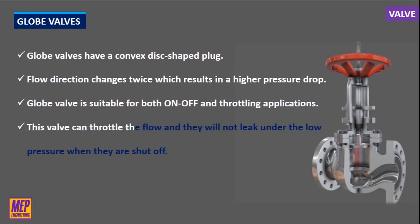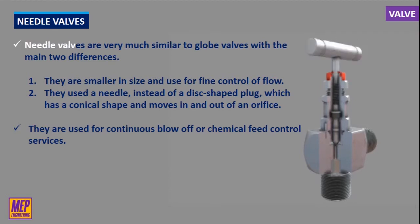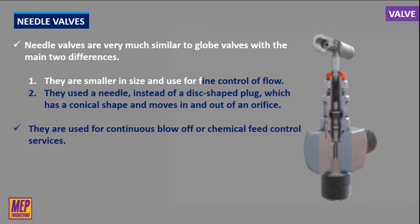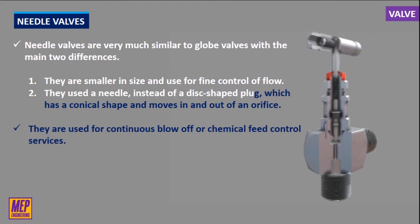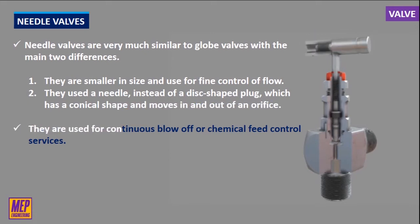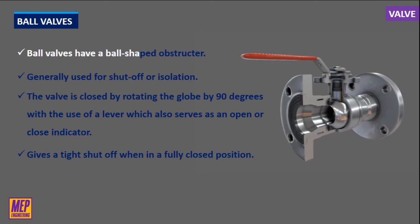Due to this type of construction, a globe valve is suitable for both on-off and throttling applications. This valve can throttle the flow and will not leak under low pressure when shut off. Needle valves are very similar to globe valves, with two main differences: they are smaller in size and used for fine control of flow, and they use a needle instead of a disc-shaped plug, which has a conical shape and moves in and out of an orifice. They are used for continuous blow-off or chemical feed control services.